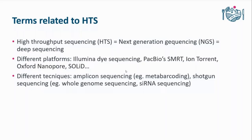First, some terms. At least in my institute, people use different names of platforms, techniques, and terms as synonyms, even though they are not really the same thing. Basically, people talk about high-throughput sequencing, which is the same as next-generation sequencing — maybe an old term for HDS — and this is also the same as deep sequencing. Then there are different platforms you can use to do HDS.